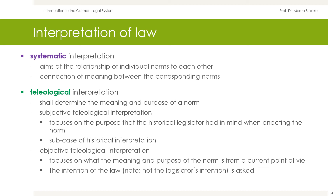In teleological interpretation, the meaning and purpose of a norm is determined. A distinction is made between subjective and objective teleological interpretation. The subjective teleological interpretation focuses on the purpose that the historical legislator had in mind when enacting the norm — in fact, it is a sub-case of historical interpretation. The objective teleological interpretation, on the other hand, focuses on what the meaning and purpose of the norm is from a current point of view: the intention of the law, not the legislator's intention, is asked.